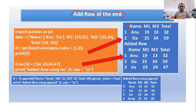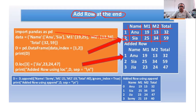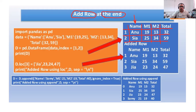As I told you in my previous classes, a data frame is a collection of rows and columns. You can see here there are two rows and four columns. This is one row, this is the second row, and we have four columns: name, m1, and so on. So we need to have the basic concept of a data frame — it is a 2D structure.